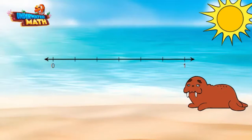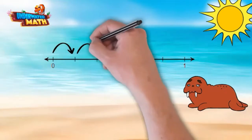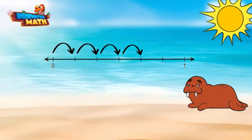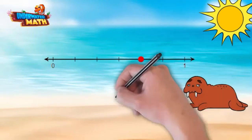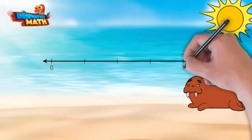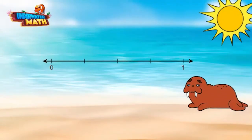If we wanted to show the fraction four-sixths on this number line, we start at zero and count each section as one-sixth: one-sixth, two-sixths, three-sixths, four-sixths. To represent this fraction, we plot a point on the number line on the fourth tick mark.